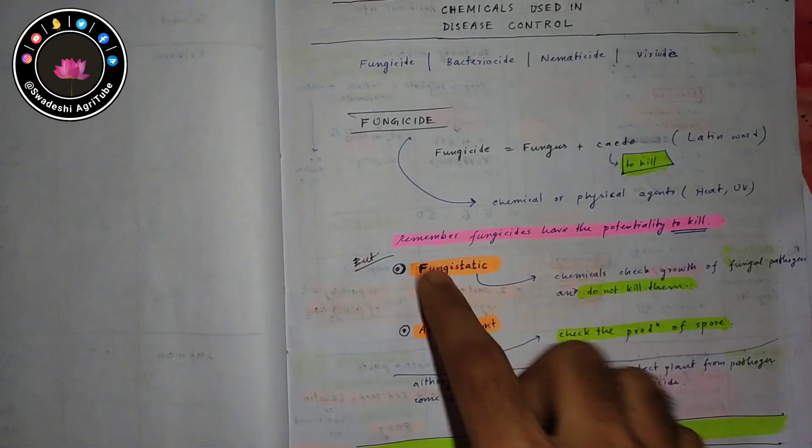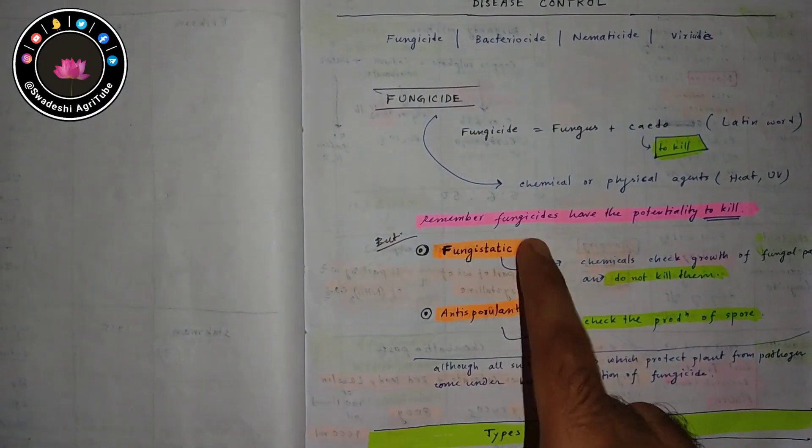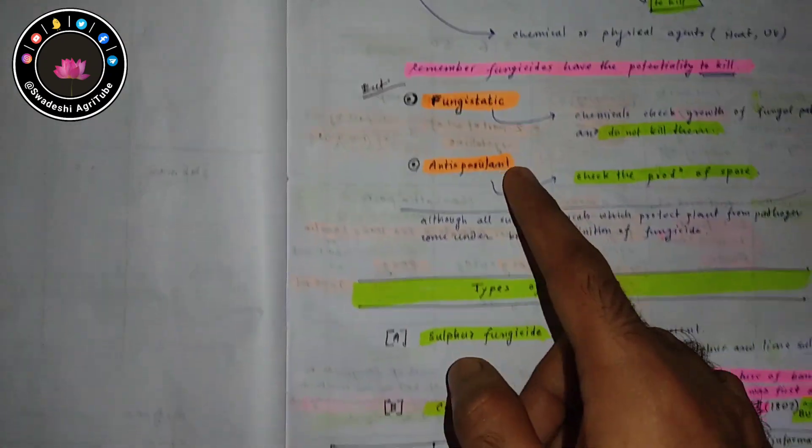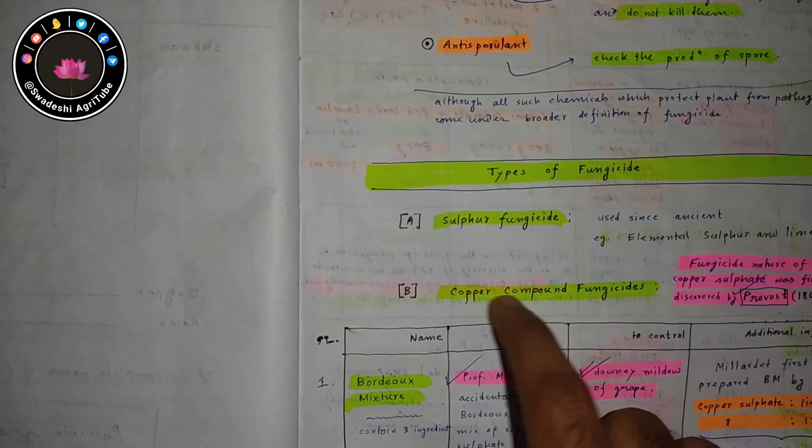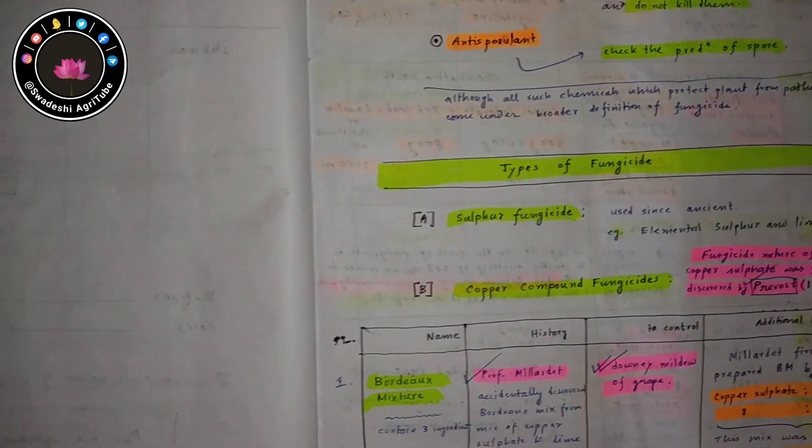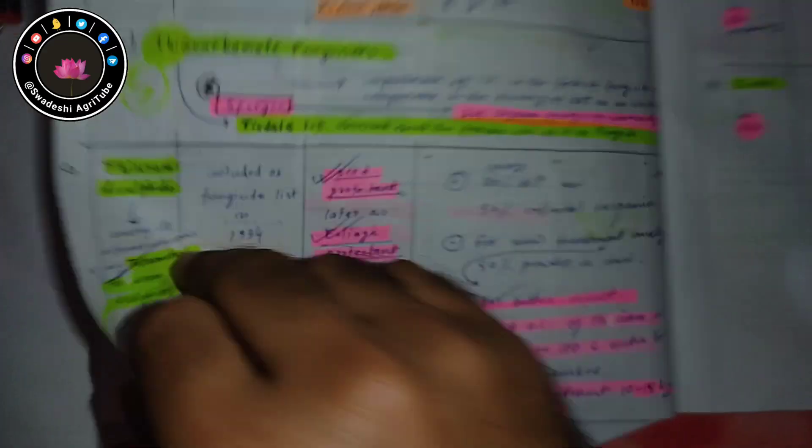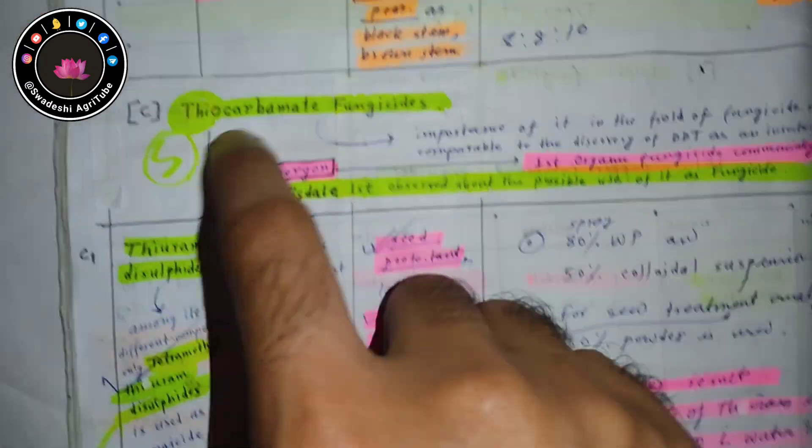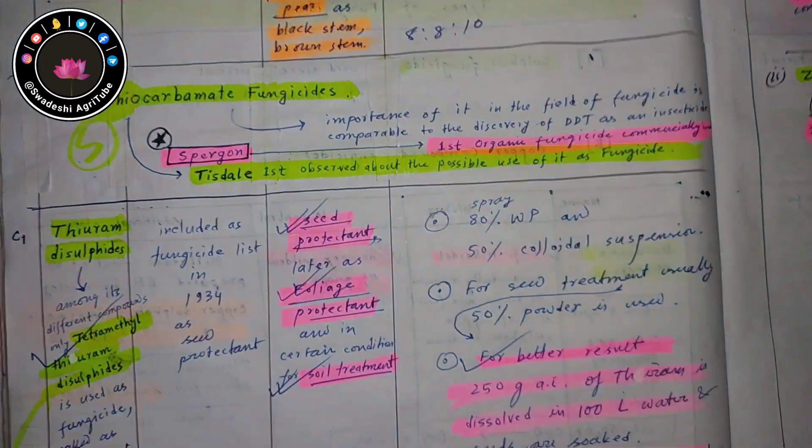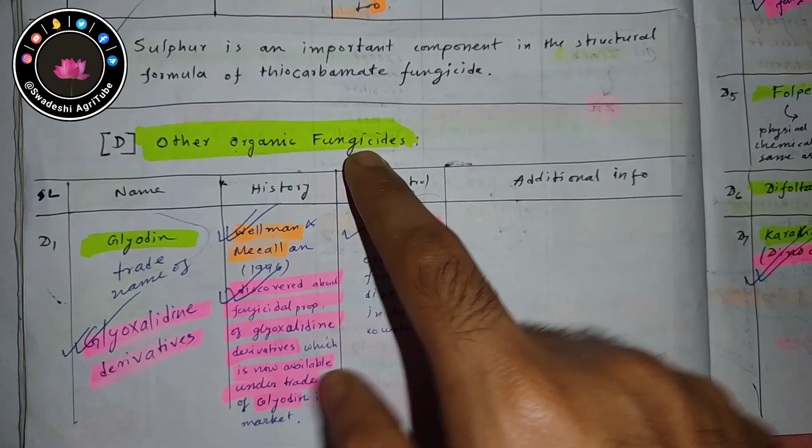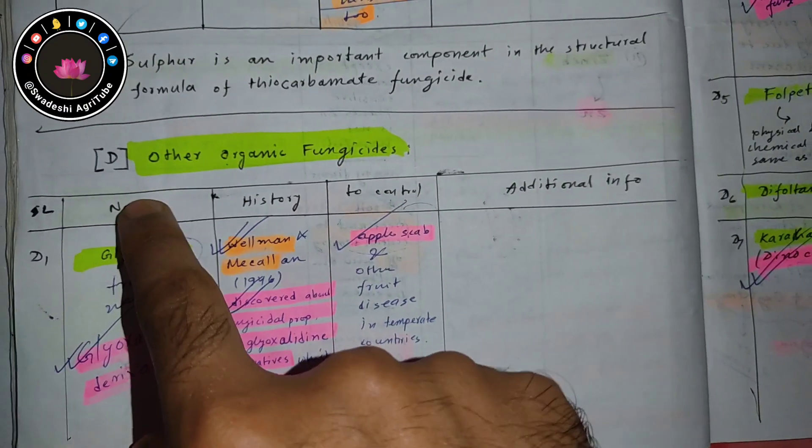This is the third part of fungicide classification. In the first part, we discussed the difference between fungicide, fungistatic, and antisporulant, and also discussed copper compound fungicides. In the second part, we discussed thiocarbonate fungicides. Please watch those videos. Today I am going to talk about other organic fungicides.